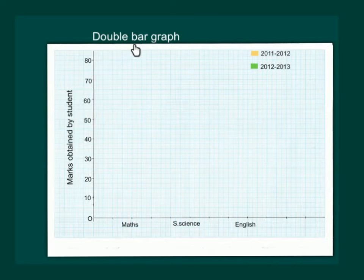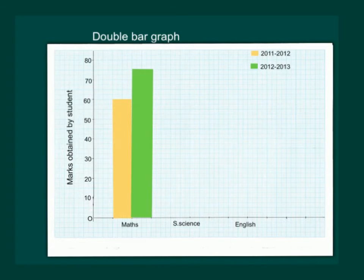A double bar graph is used to compare two sets of data simultaneously. Let us take an example. Let us make a graph of the marks obtained by the student in Maths, Social Science and English in the year 2011-2012 and 2012-2013. If we depict yellow bar, meaning the marks obtained in 2011-2012.